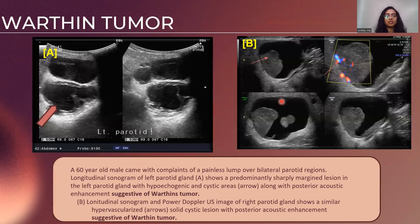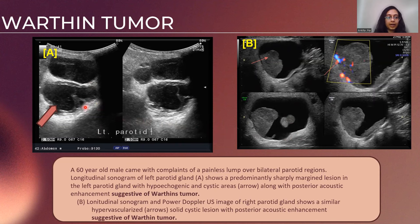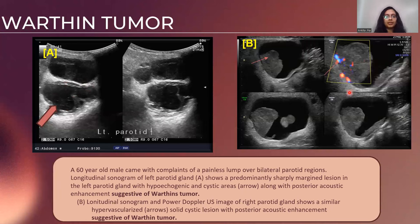Here we have a 60-year-old male patient with complaints of painless lump over bilateral parotid region. Image A shows the left parotid and image B shows the right parotid. In image A, there is a sharp-marginated lesion in the left parotid with hypoechoic cystic areas within giving typical posterior acoustic enhancement. On the right parotid, a similar cystic-solid lesion is seen, which is hypervascular on color Doppler studies. All these features are indicative of bilateral Warthin tumor.